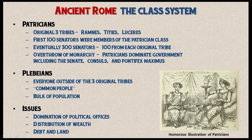It will take several centuries for Rome to evolve into a true republic, which will entail the plebeians gaining more and more rights over time. Think of the early Roman republic as more of an aristocratic republic, dominated by the patricians only.